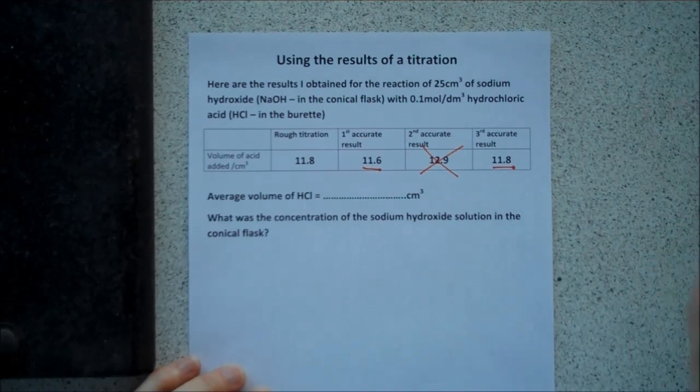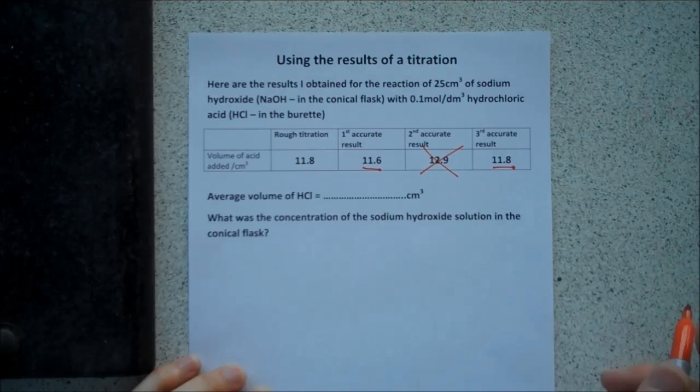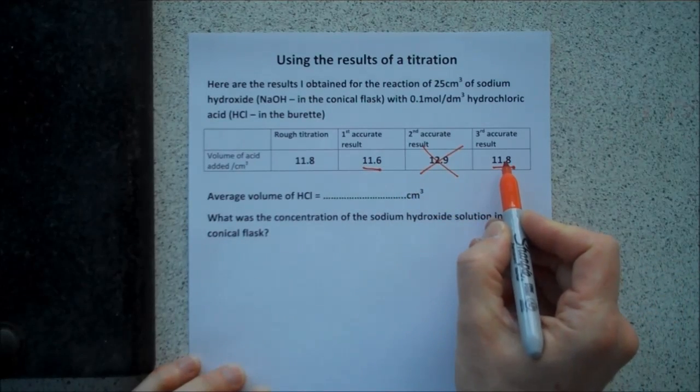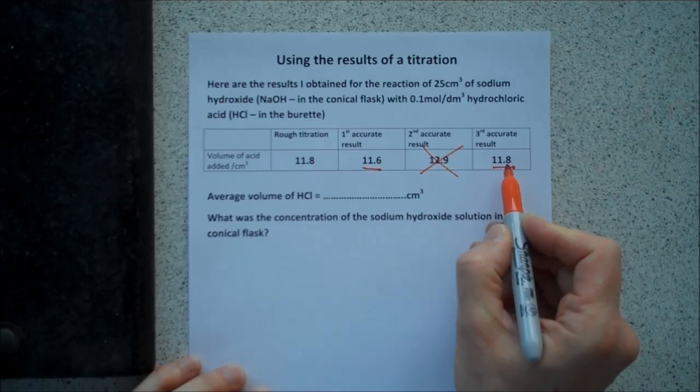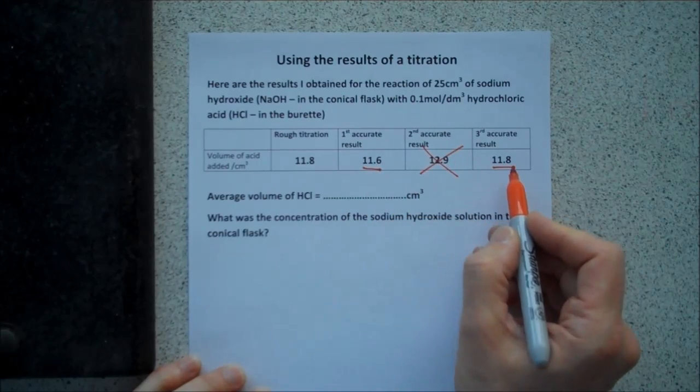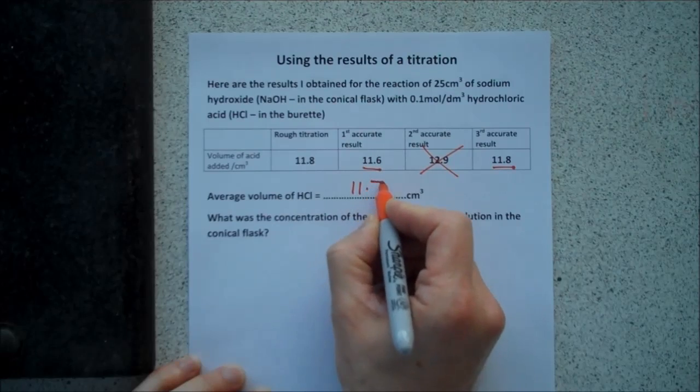That's what you might call an anomalous result. I've made an error. I didn't clean something out properly. I misread the burette. Who knows what? So we've got 11.6 and 11.8 as my two reliable, reproducible, accurate results. The average of them is 11.7.